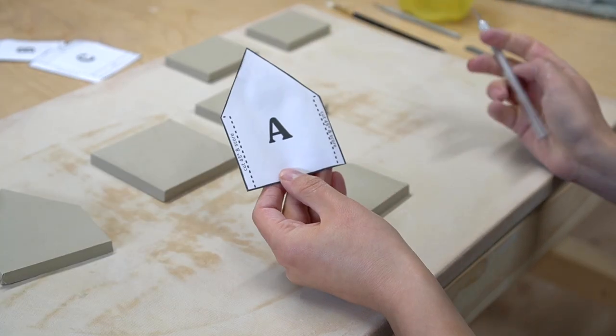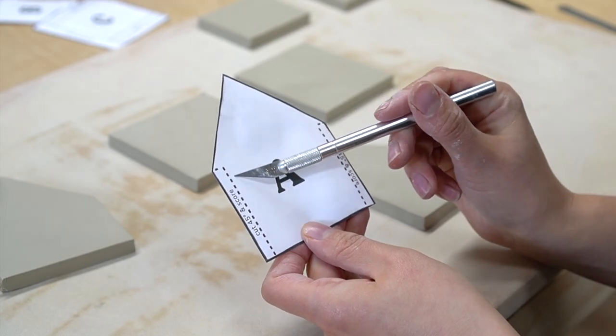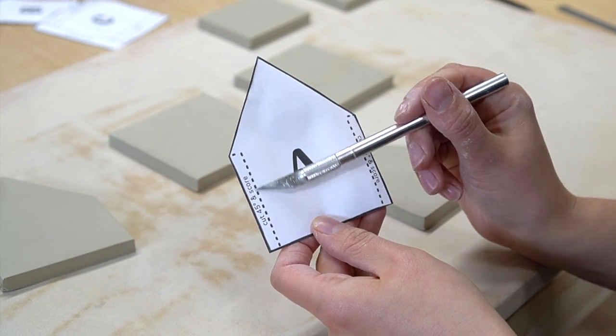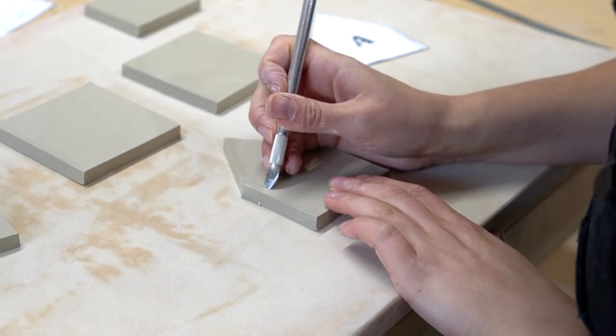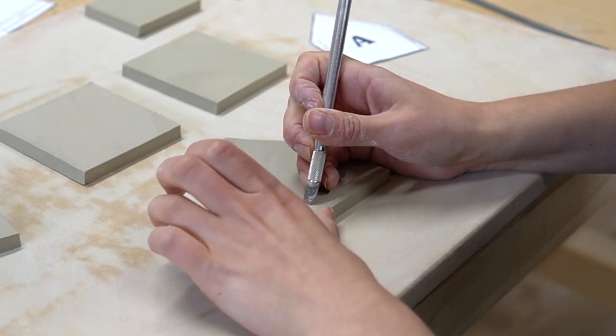Once the pieces are cut out follow the instructions on the templates to prepare the pieces for assembly. The corners of the house need to be cut at approximately 45 degrees and scored.